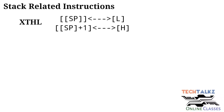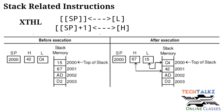The content of the stack pointer is the address of the top of the stack. When the instruction is executed, the content of the memory addressed by the stack pointer is exchanged with the L register, and the content of the next memory location is exchanged with the H register.